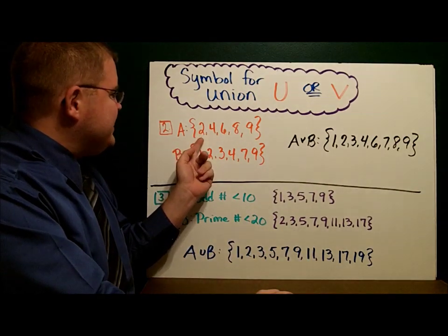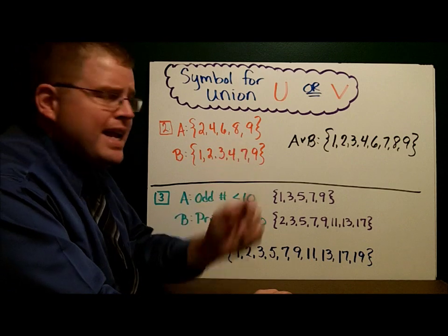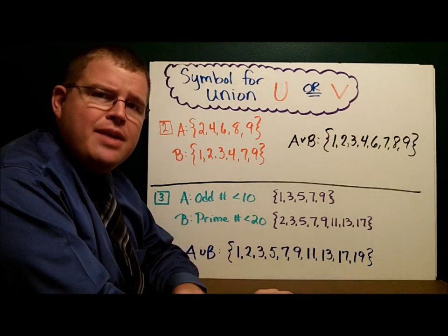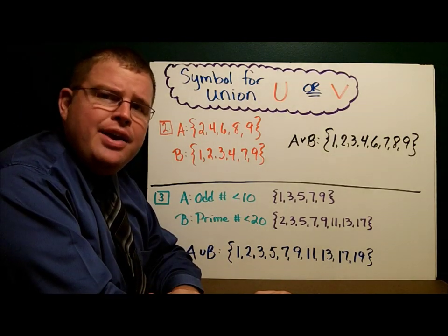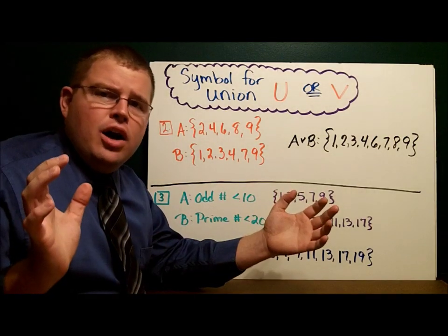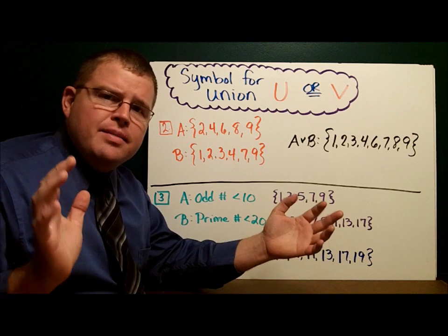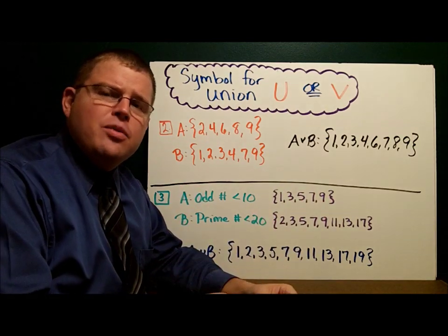If we have set A, which is 2, 4, 6, 8, and 9, and we have set B, which is 1, 2, 3, 4, 7, and 9, A union B is simply taking all of those numbers, all of those elements, and putting them together into one set.